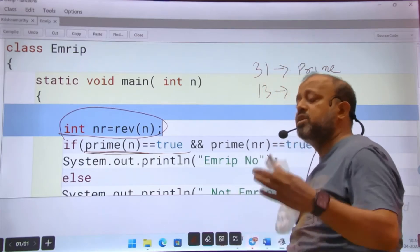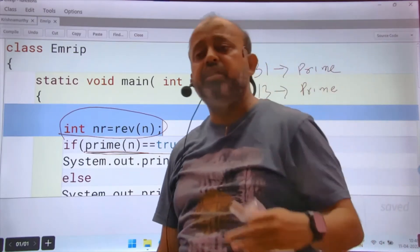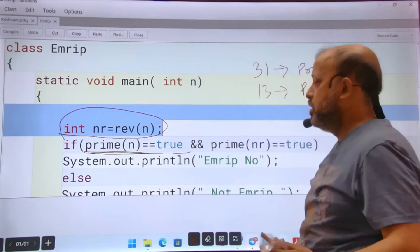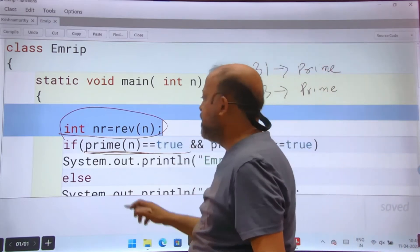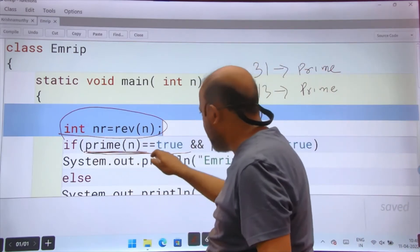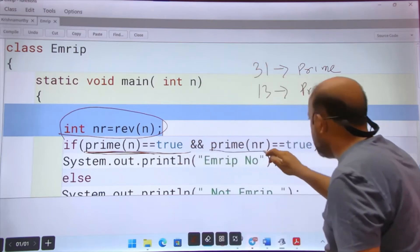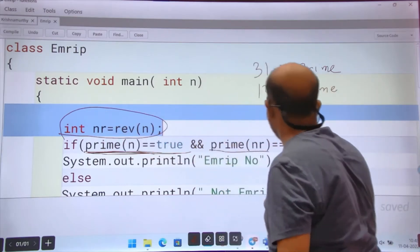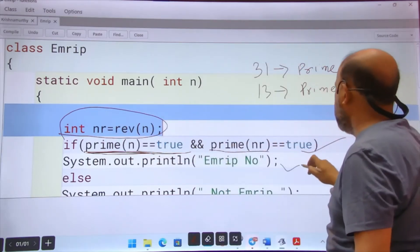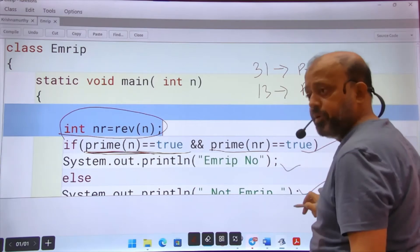Rev gives me reverse. Here I have called prime function. I have assumed that prime function is giving me true or false. A function can return any data type - integer, float, string, char - so it is returning boolean. So if prime n, that means n is prime, and nr is the reverse, and reverse is also prime.